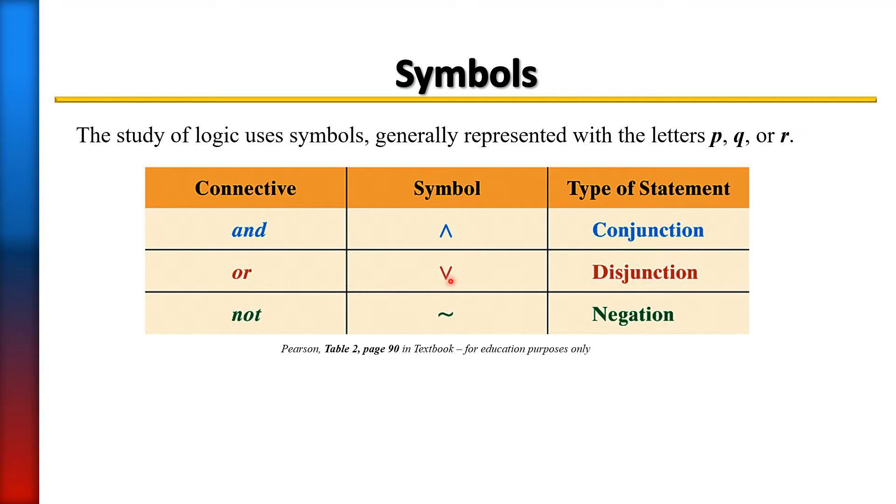The OR connective is shaped like a V, and we use that when we have a disjunction statement. You're already familiar with NOT, which is the little tilde symbol. That's when you have a negation of a statement.